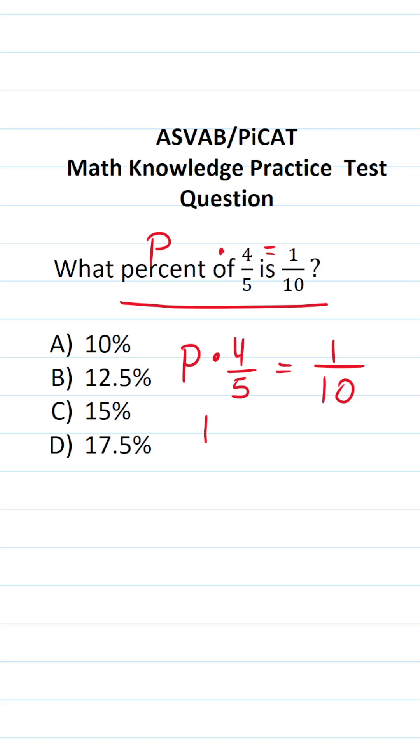And we could rewrite this to be four-fifths P equals one-tenth. Now we're just going to solve for P, and to do that we're going to multiply both sides of this equation by the reciprocal of four-fifths, which is going to be five-fourths.